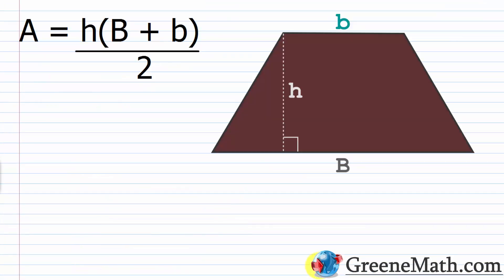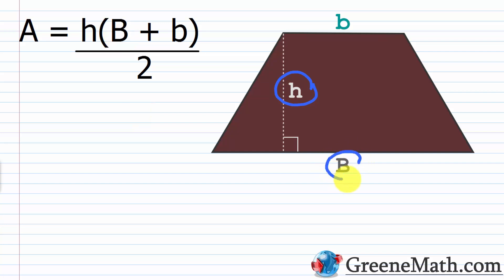Let's look at another formula from geometry — the area of a trapezoid. A equals H times the quantity uppercase B plus lowercase b, divided by 2. Here H is the height, uppercase B is the lower base, and lowercase b is the upper base. We then divide by 2.